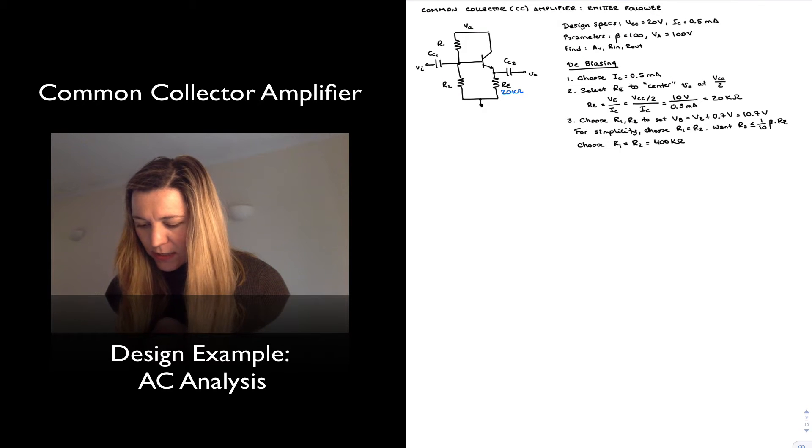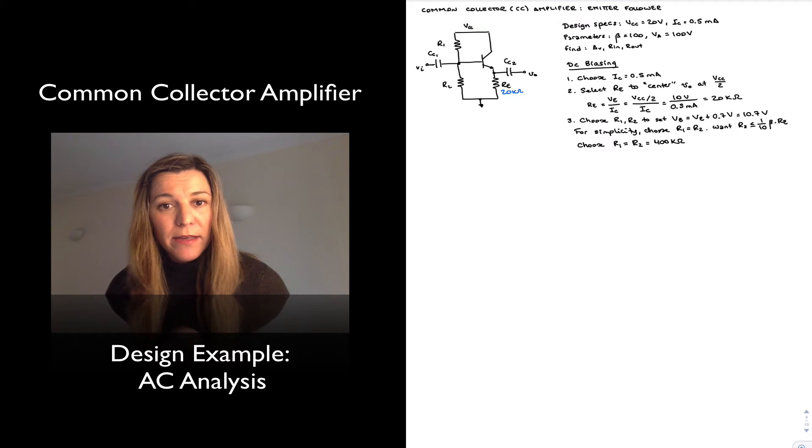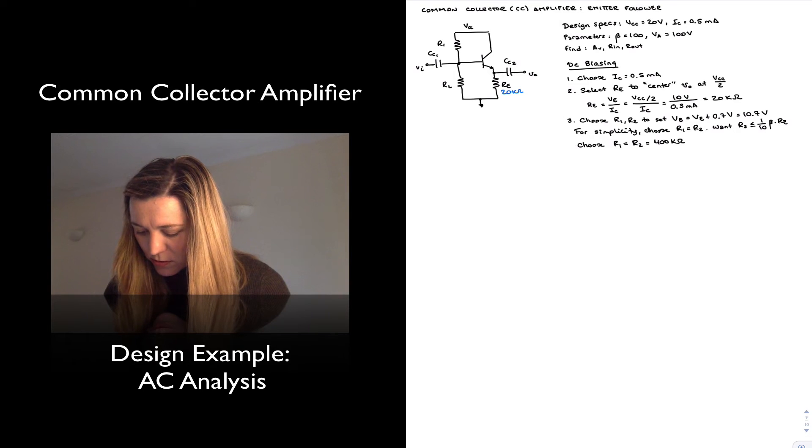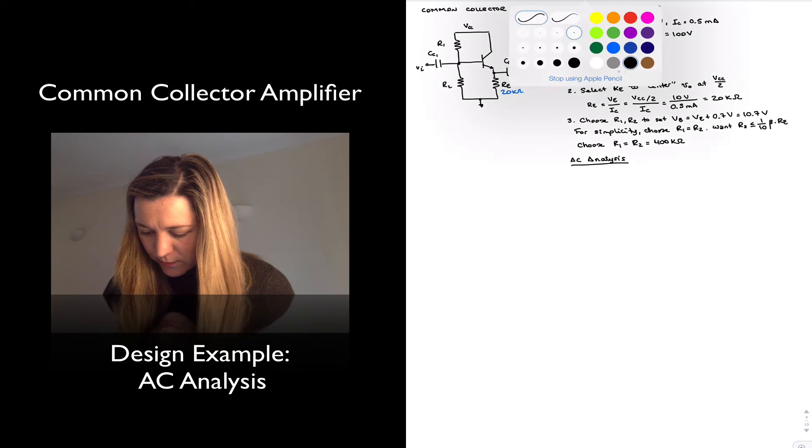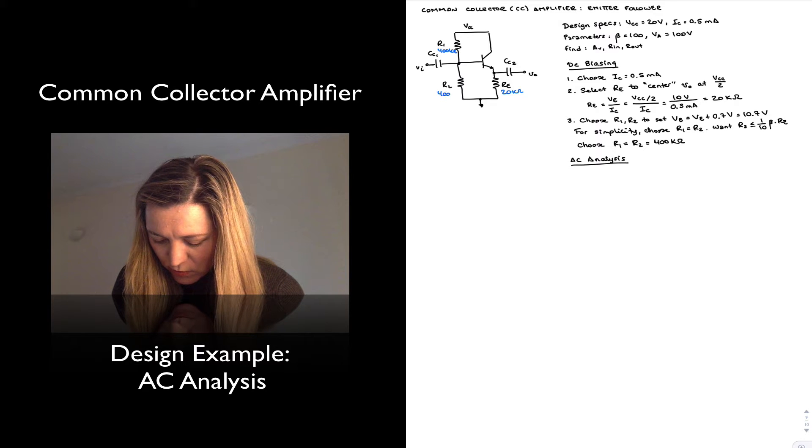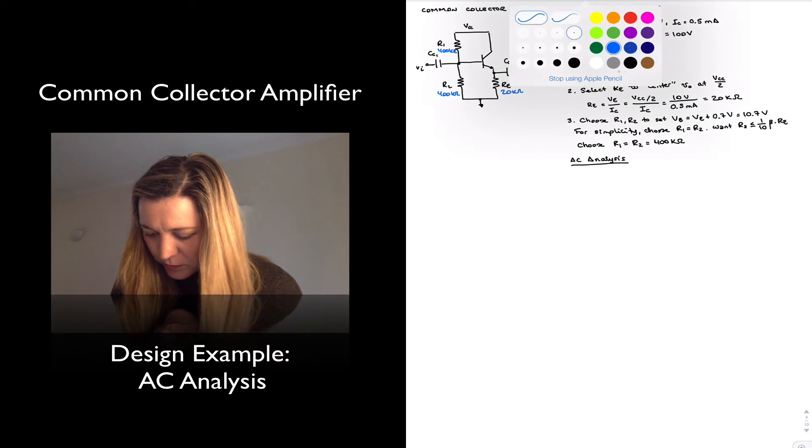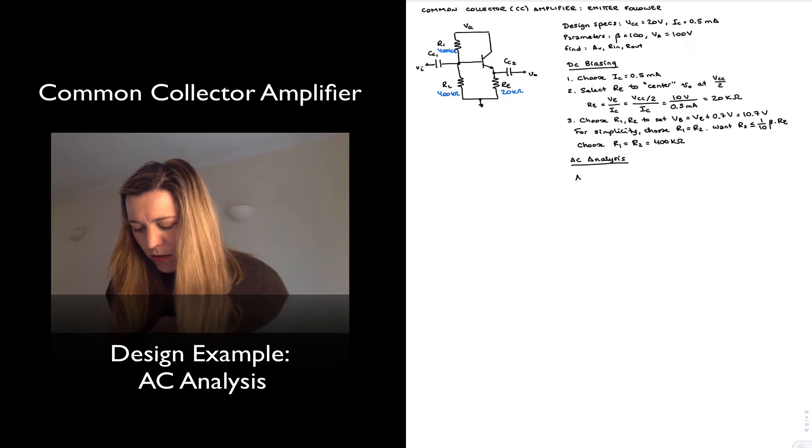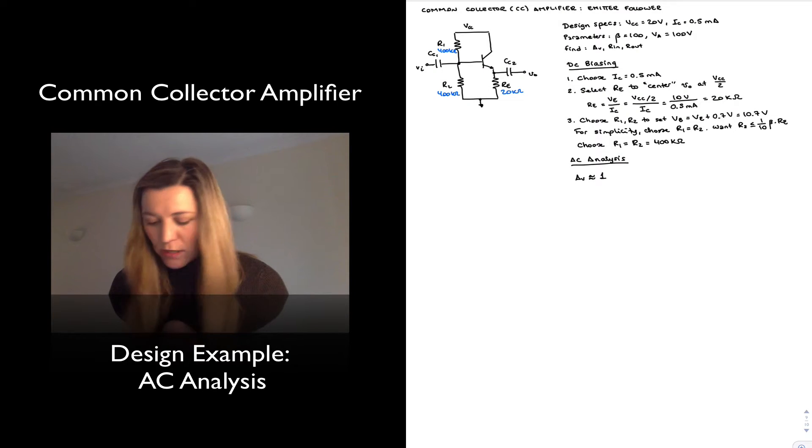So basically now I can go ahead and calculate my AC parameters. AC analysis. Before that I'm going to enter those values here, so this is 400 kilo ohms, 400 kilo ohms. Now my voltage gain is going to be approximately equal to 1, not much to calculate here. That's just because this is an emitter follower.